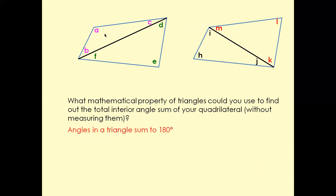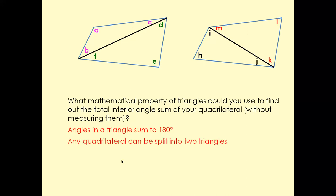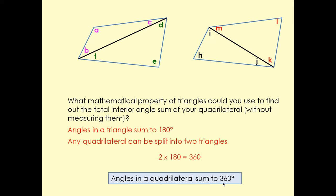A quadrilateral can be split into two triangles. We know that angles in a triangle add up to 180 degrees. So this triangle here — angles A, B, C add up to 180 degrees, and angles E, F and D also add up to 180 degrees. So two triangles in a quadrilateral means all the angles in a quadrilateral add up to 360 degrees. That's the fact we need to know.